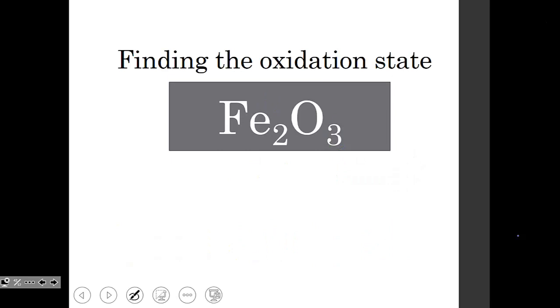Here iron might have a different oxidation state. So this is iron something oxide. While we don't know the iron, we do know that when added together, all the oxidation states have to equal zero as this is a neutral compound.